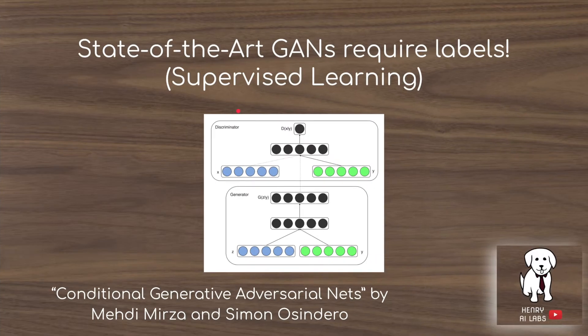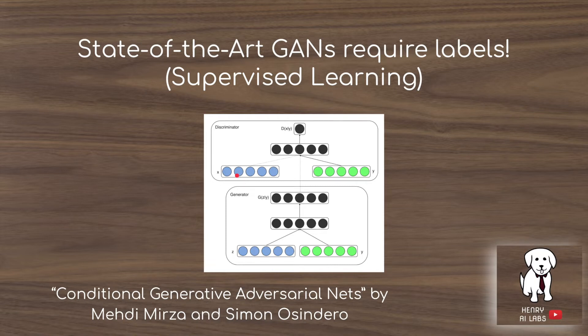The problem is that state-of-the-art GANs require labels. It's a supervised learning technique, and this started with the conditional generative adversarial networks, where you take a one-hot encoded class vector and embed it with the generated image or the real image on the discriminator, and with the latent code on the generator.